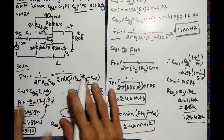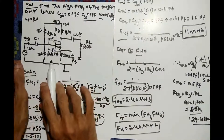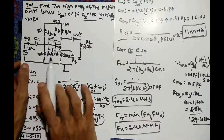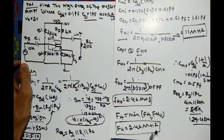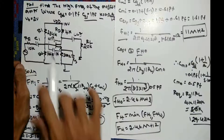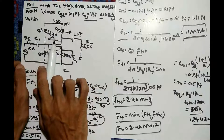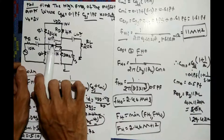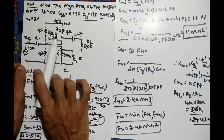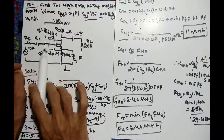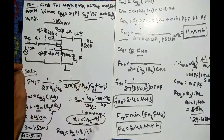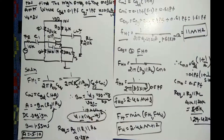In summary, for this circuit the high-frequency cutoff FH is 2.46 MHz. If the operating frequency exceeds 2.46 MHz, the gain decreases and is no longer under control. Therefore, for this particular circuit, the frequency must be kept below 2.46 MHz to maintain the expected gain.